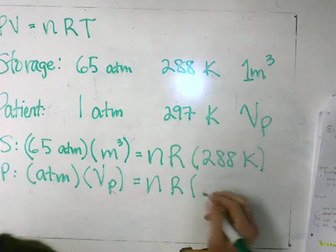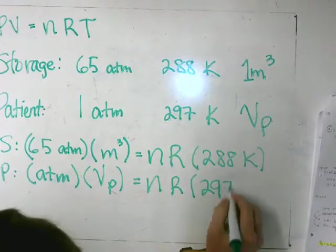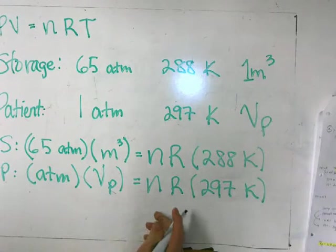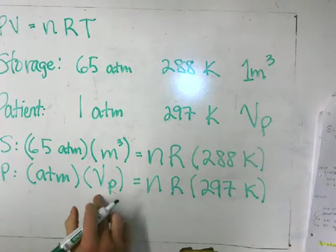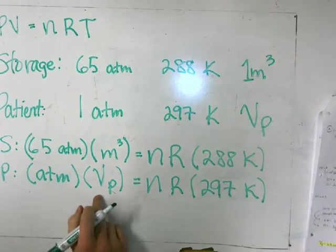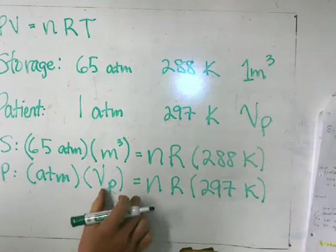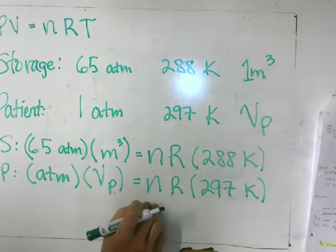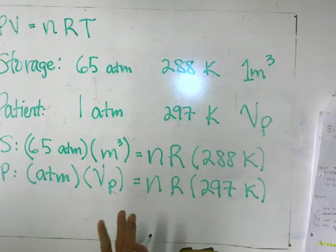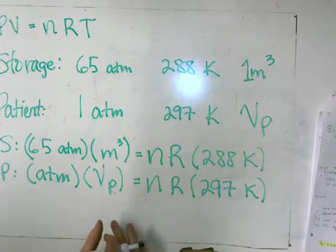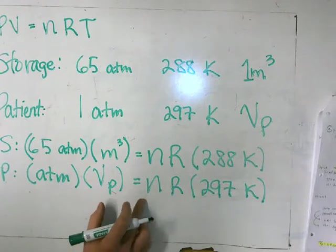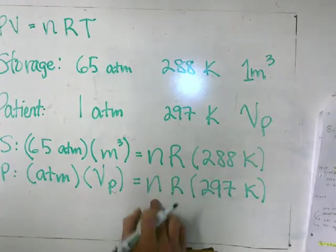Now, we're trying to solve for the volume in the patient's room, but in that equation we don't know the number of moles and we don't know the volume. So we have two variables in one equation and we can't solve using that one equation alone. But the great thing about this problem is that we have two equations that share the variable N. So how can we use that? Let's isolate NR — the number of moles times R — in both equations.